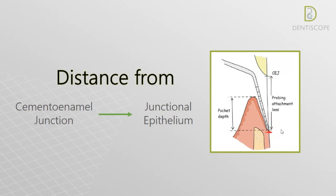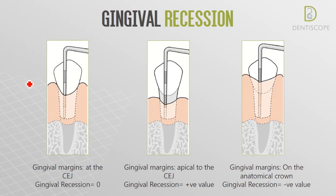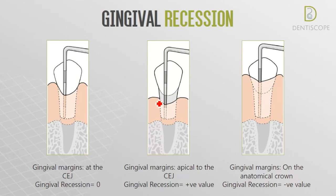which is the deepest point of the pocket. Before we move on, we need to understand gingival recession. Normally gingival margins should lie at the cemento-enamel junction, but in gingival recession the gingiva recedes apical to the cemento-enamel junction, so the gingival margin is not on the cemento-enamel junction and the root is visible. This gives us a positive value of gingival recession.